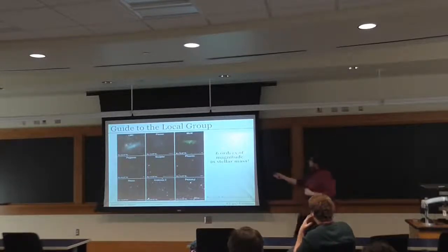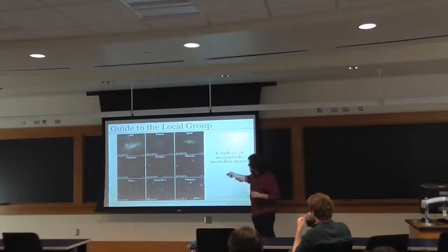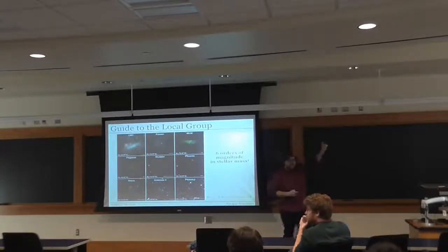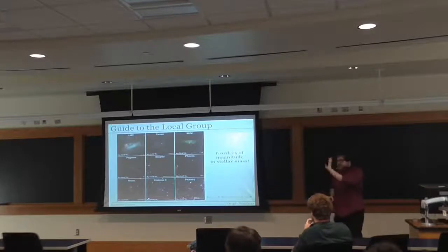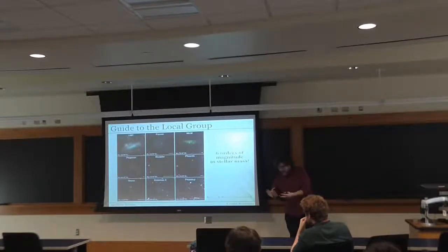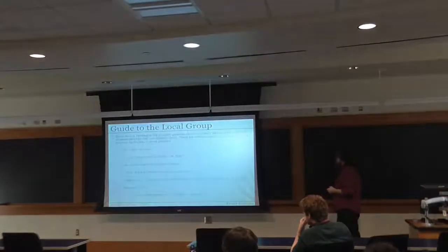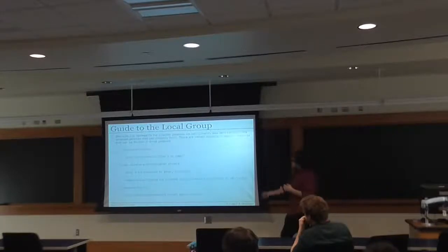One of the great things about studying the local group is that we can see these objects in resolved stars. You can actually pick out individual stars, measure their velocities, ages, and colors, and combine those stellar properties with galaxy formation as a whole. These are some of the things I'm interested in using the local group to understand.